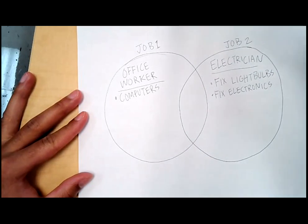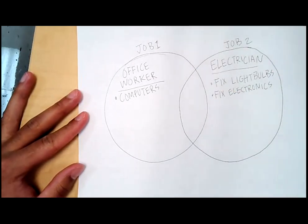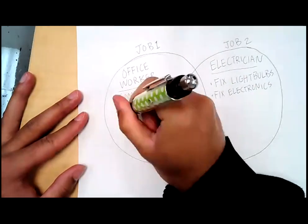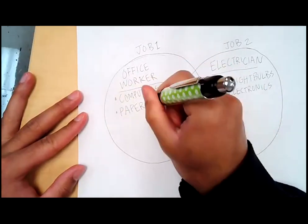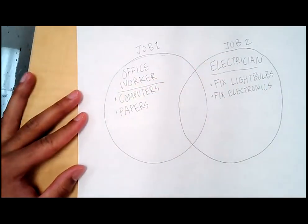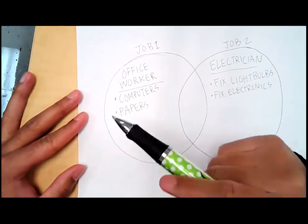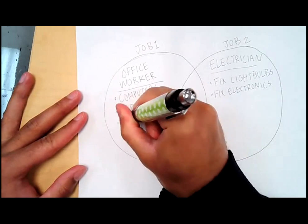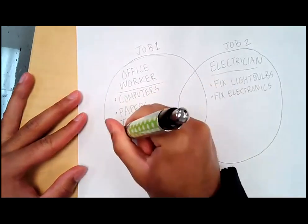Rosalinda, what's something else an office worker does at work or works with? They work on papers that need to be finished. Okay, work with a lot of papers. Demaje Lister, what's something else an office worker might work with or do at work? Take calls on computers and stuff. Okay, take calls. Or check people in. Check people in.